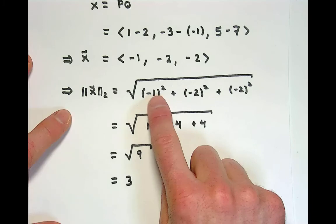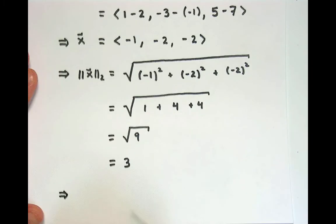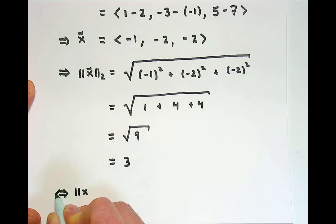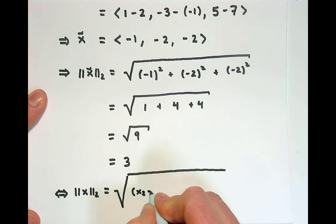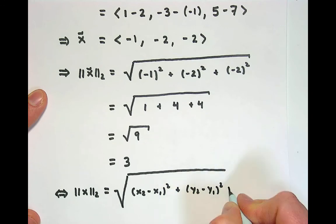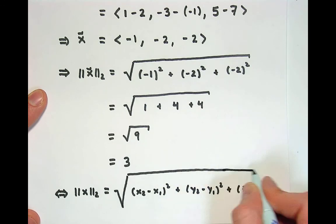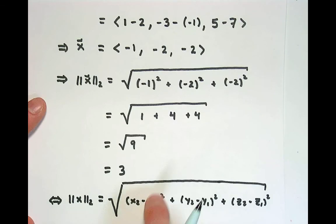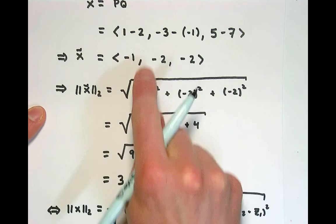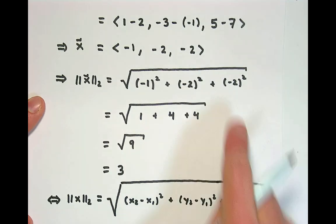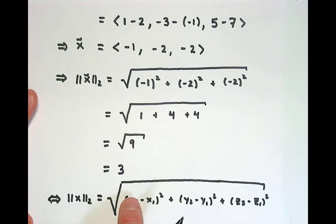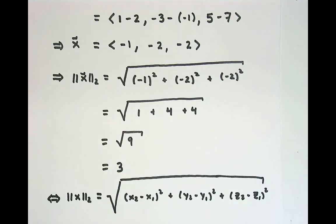One thing I want to note is we've suppressed some work here. If you look at the formal definition of the 2-norm we just derived, it required (x2 − x1)² + (y2 − y1)² + (z2 − z1)². That's exactly what we've done: x2 − x1 is 1 − 2 = −1; y2 − y1 is −3 − (−1) = −2; z2 − z1 is 5 − 7 = −2. We then square each component to get the 2-norm. In the next video, we'll chat about the vector operations of addition and scalar multiplication in R3. See you there.